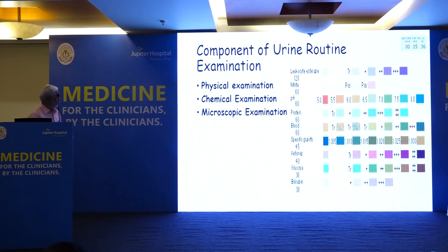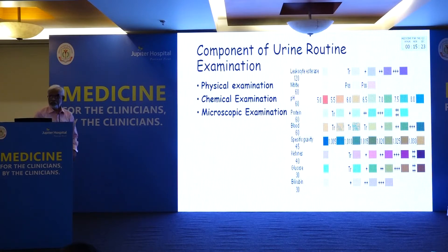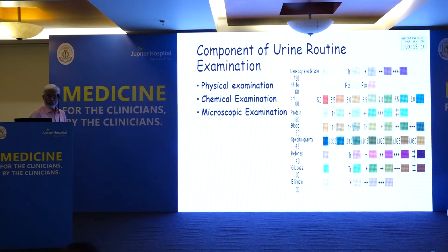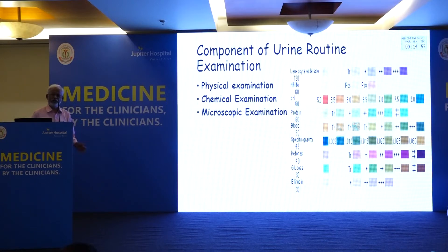The components of urine routine examination are physical examination, chemical examination, and microscopic examination. Physical and chemical examinations are now replaced by the dipstick test, which can tell you leukocyte esterase, nitrite, pH, protein, blood, specific gravity, ketone, glucose, and bilirubin. Microscopic examination is getting more advanced, but the problem is that the majority of laboratories are going for automatic urine examination. So microscopy is still neglected and needs to be upgraded.